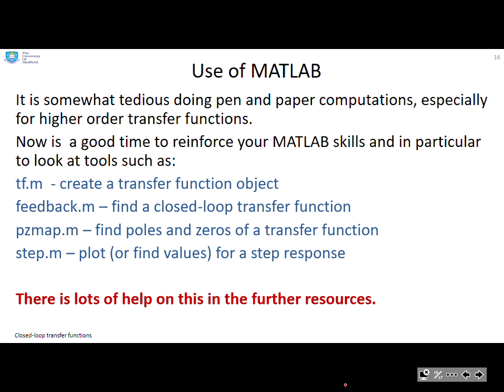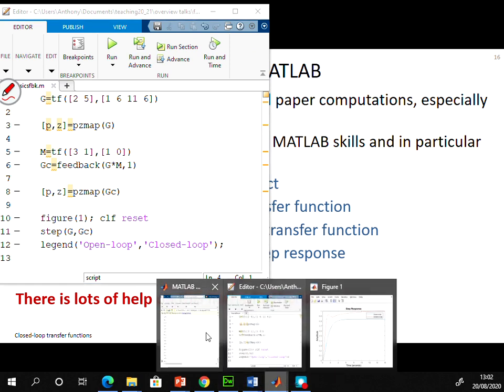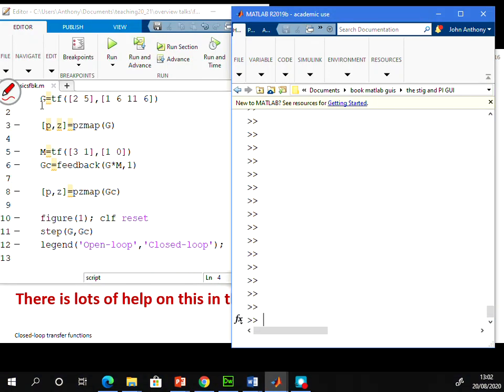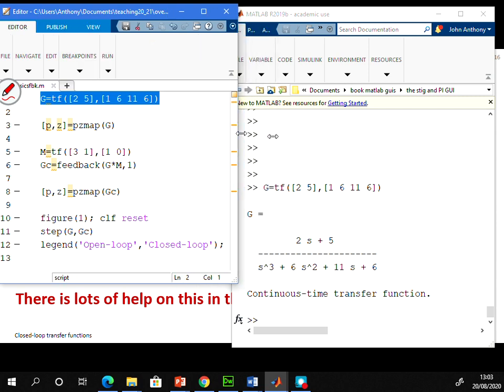So you can see here I've got some of the expressions ready and I'll just open the command window. So here's an example of tf. So if I run that command, and that needs to be a bit narrower, then you can see that expression here. The 2 and 5 become the numerator coefficients, 2s plus 5. And the 1, 6, 11 and 6 become the denominator coefficients. So you can very easily create a transfer function object using tf, using the coefficients in the numerator, followed by the coefficients of the denominator.